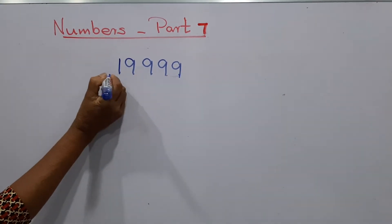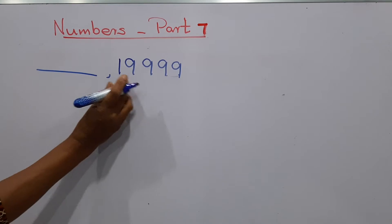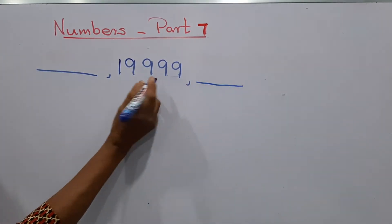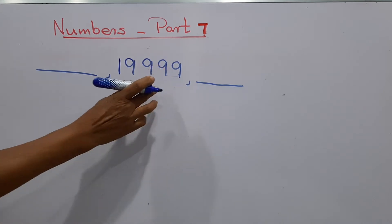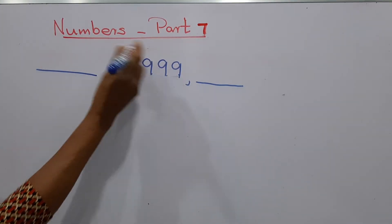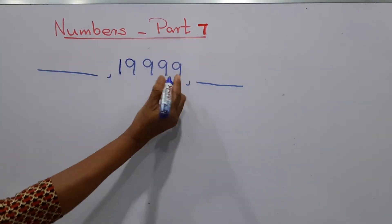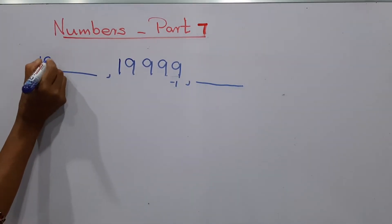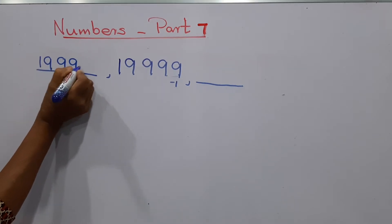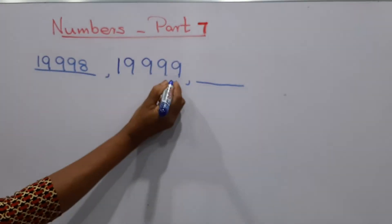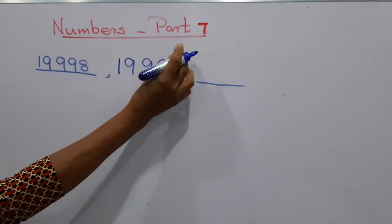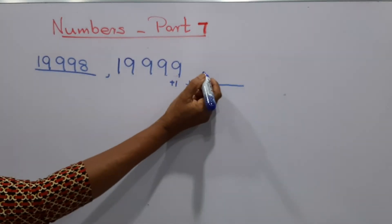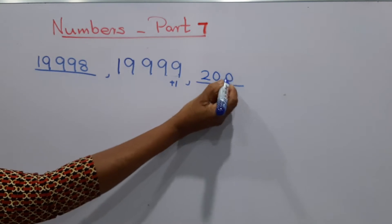I'm asking: what is the number before 19,999 and the number after 19,999? You have to deduct 1 from the ones place. That is 19,998. When you add 1 to the ones place, it will be 20,000.